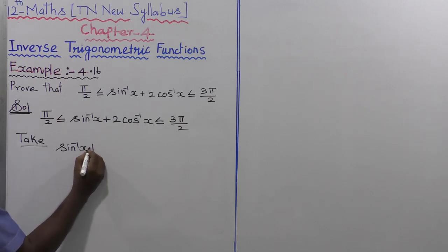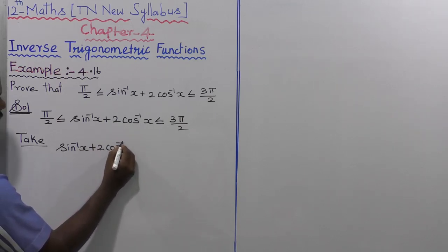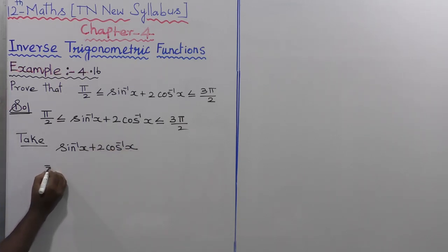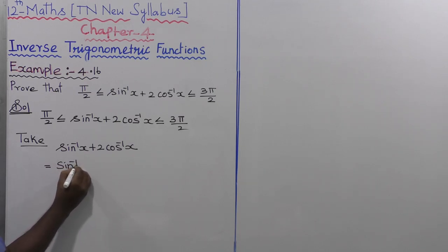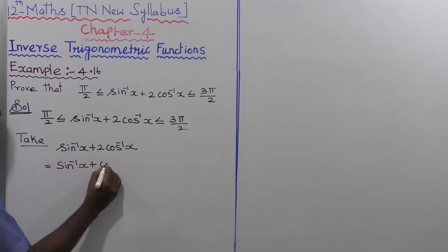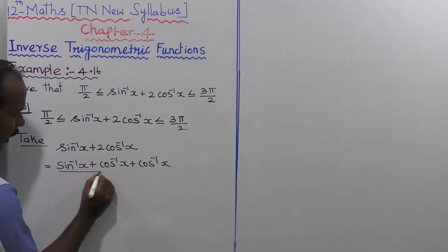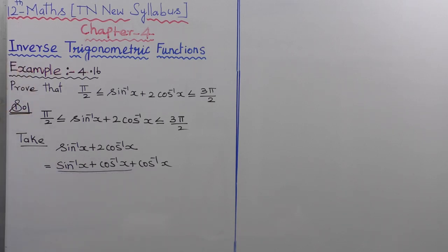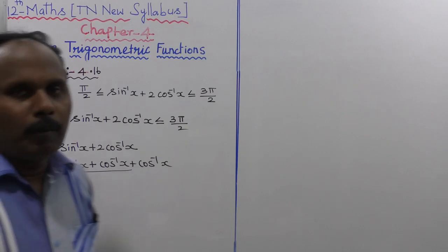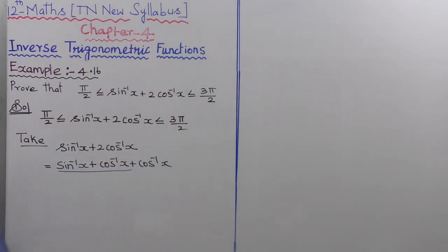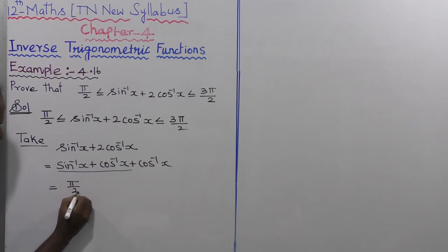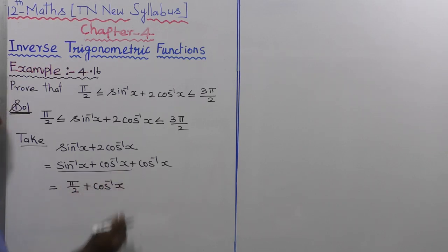We write sin⁻¹(x) + 2·cos⁻¹(x) as sin⁻¹(x) + cos⁻¹(x) + cos⁻¹(x). Using the formula sin⁻¹(x) + cos⁻¹(x) = π/2, we replace that sum to get π/2 + cos⁻¹(x).